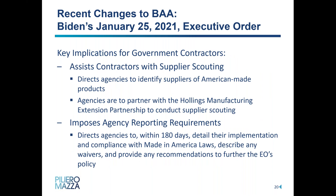The executive order also assists contractors with supplier scouting by directing agencies to identify suppliers of American-made products. Agencies are to partner with the Hollings Manufacturing Extension Partnership to conduct supplier scouting, connecting new businesses to federal contracting by requiring agencies to scout for American companies — including small and medium-sized companies — able to produce goods, products, and materials in the U.S. that meet federal procurement needs. Finally, it imposes agency reporting requirements directing agencies to, within 180 days, detail their implementation and compliance with Made in America laws, describe any waivers, and provide recommendations. These reporting requirements further highlight the Biden administration's renewed emphasis on strengthening Buy America laws.